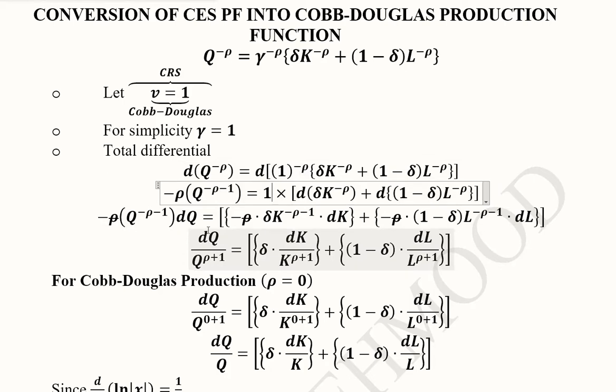Now we can cancel out a few things. For example, minus Rho which is present on both sides. When we cancel them out, we are left with these terms. Now these terms are rearranged in a certain way because the powers, they are negative of all of these variables.